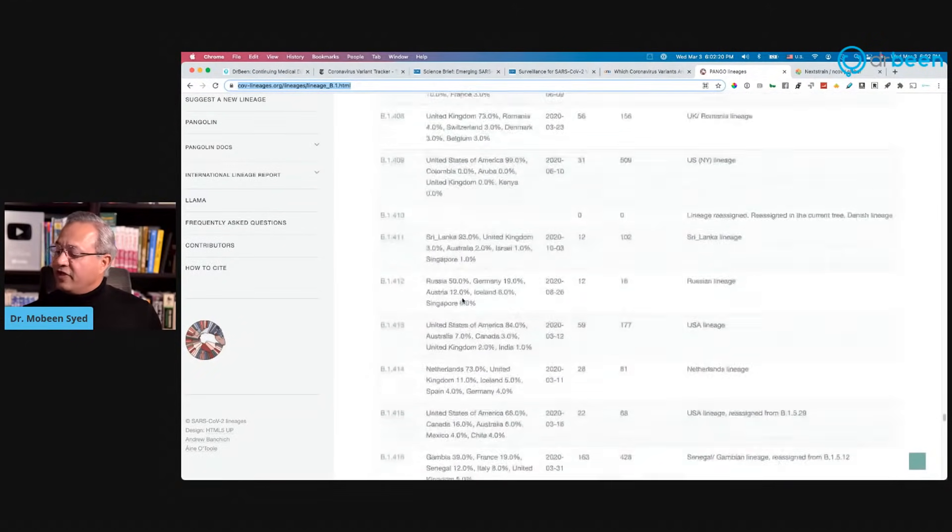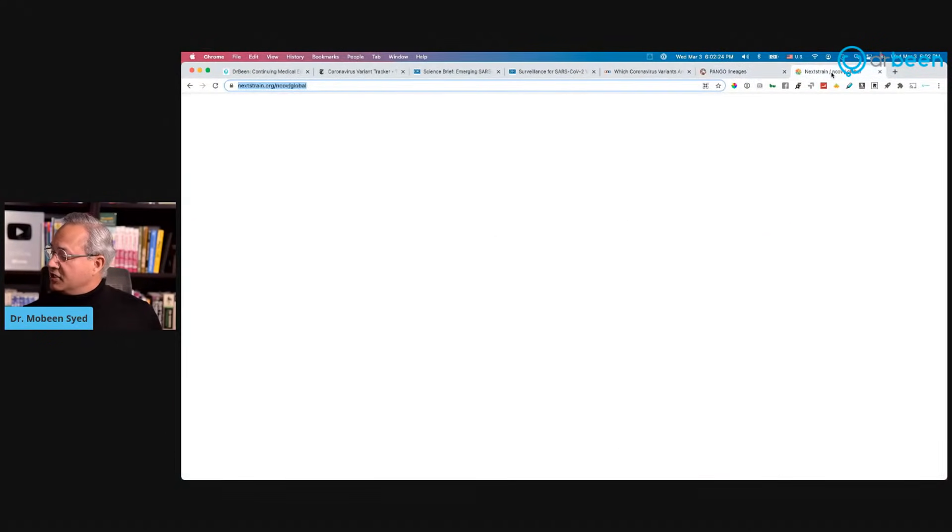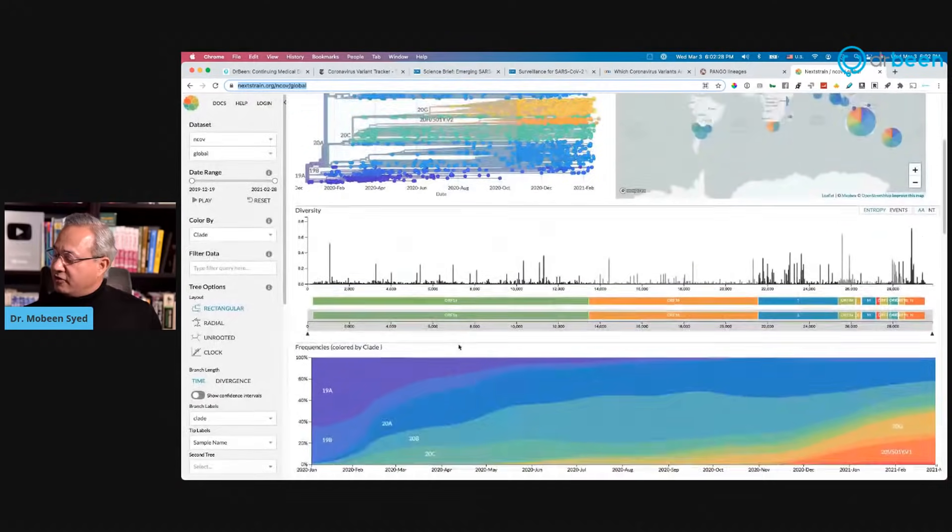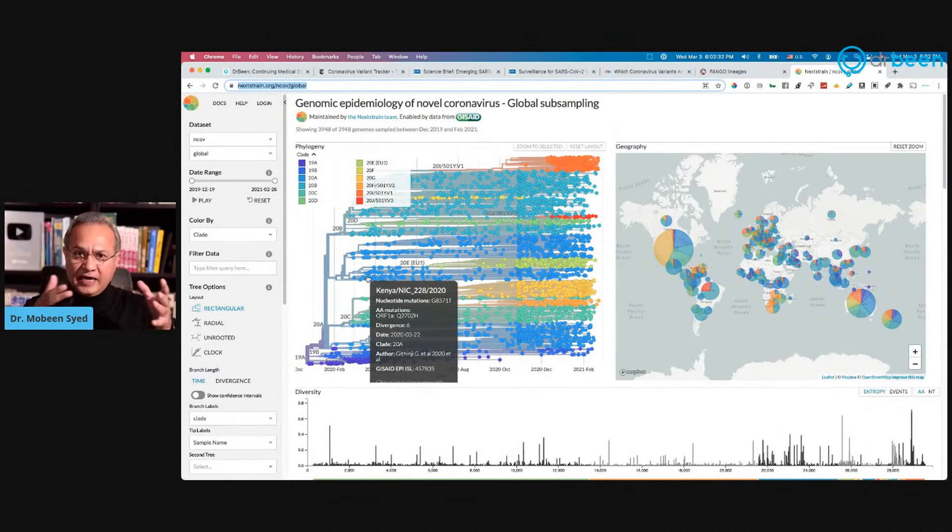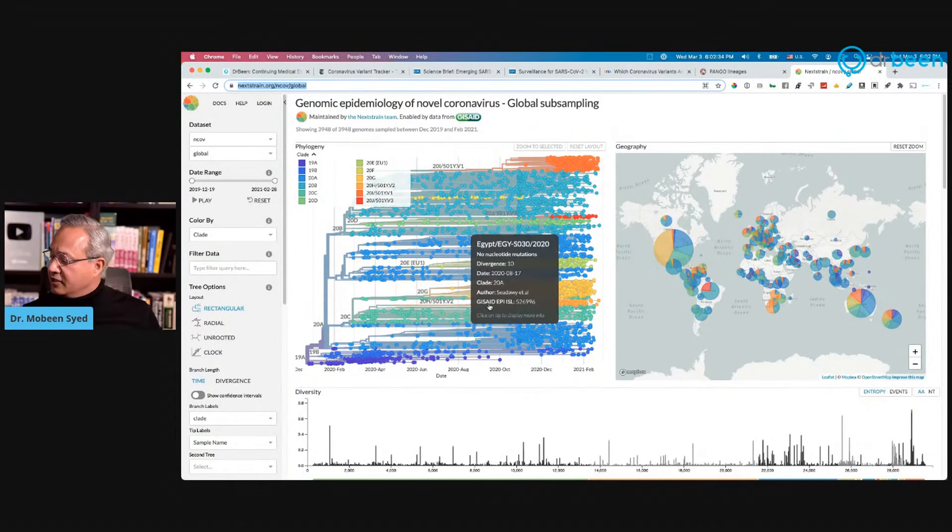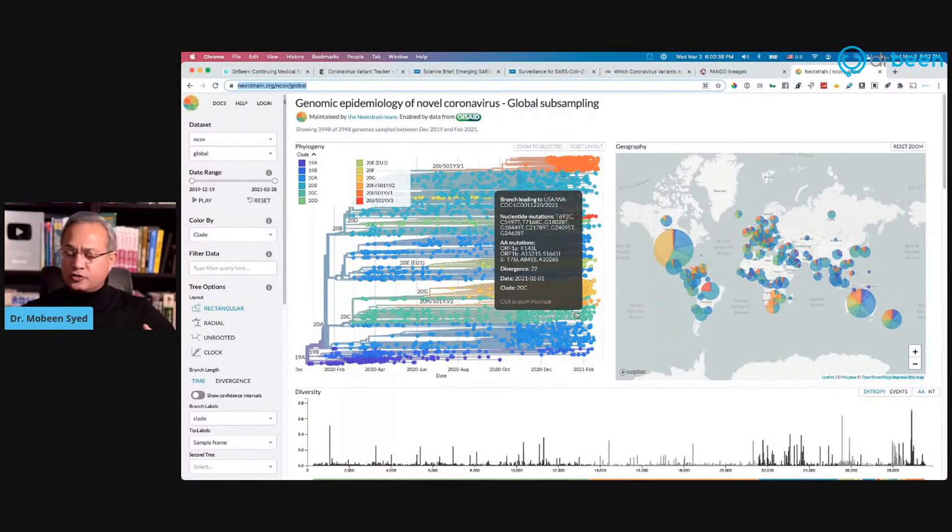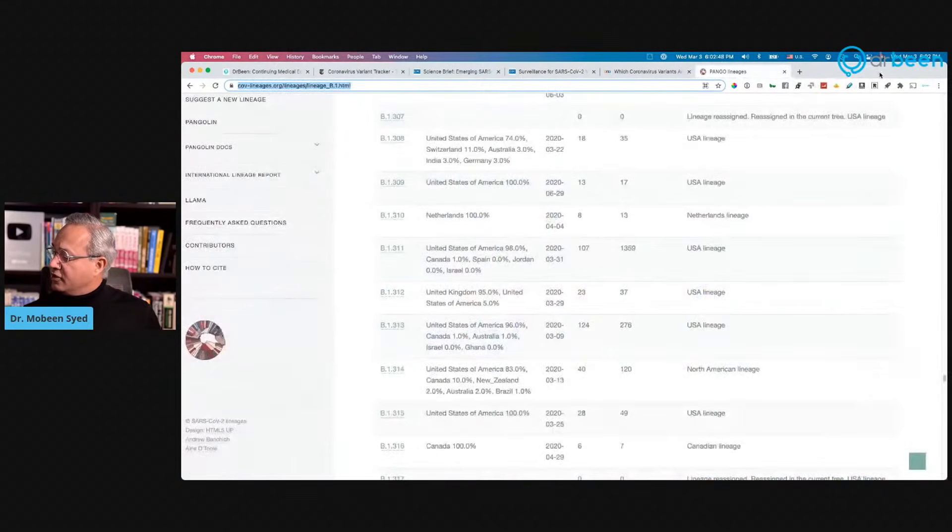This is another decent article by NPR: Worried About Coronavirus Variants, Here Is What You Need To Know. This is a variant tracker, just like Nextstrain which is here. I'm actually going to turn it off because it takes too much processing power and that causes a lag on the video relay.